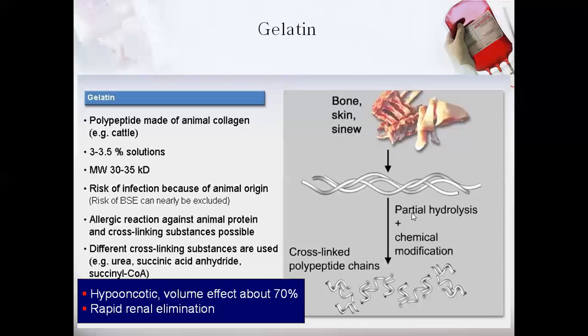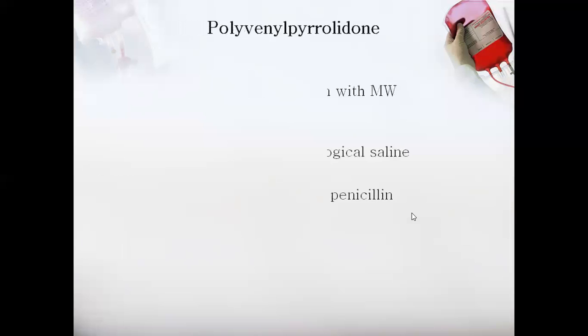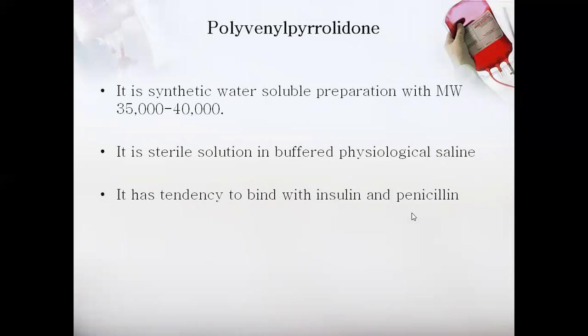Polyvinyl pyrrolidone is a completely synthetic plasma volume expander. It is a sterile solution given in buffered physiological saline, but it has a tendency to bind with insulin and penicillin.